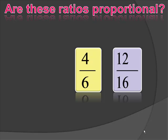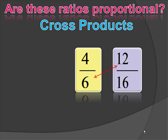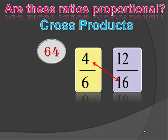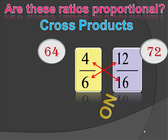Let's look at an example of two ratios and determine whether or not they are proportional. We will use their cross products. So 4 times 16 is 64, and 6 times 12 is 72. Since their cross products were not the same, the answer to this would be no — these two ratios are not proportional.